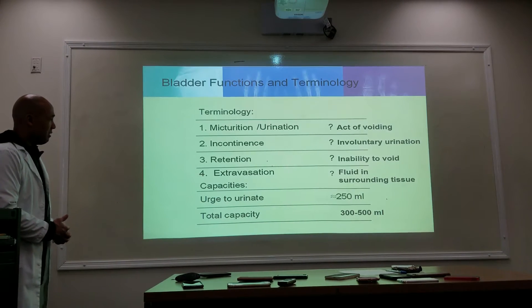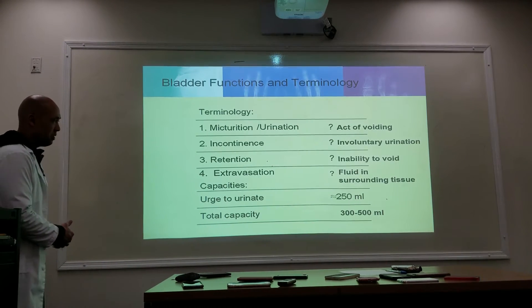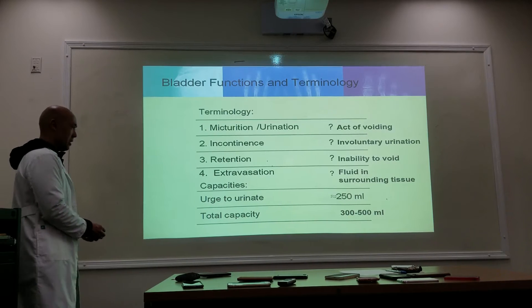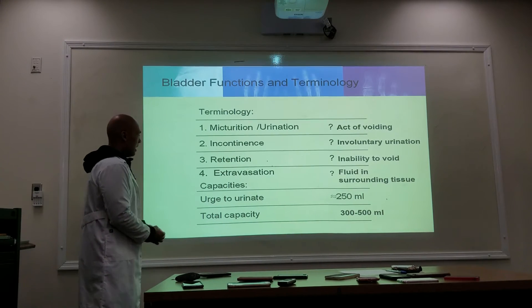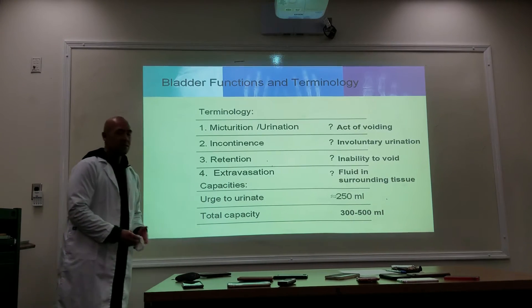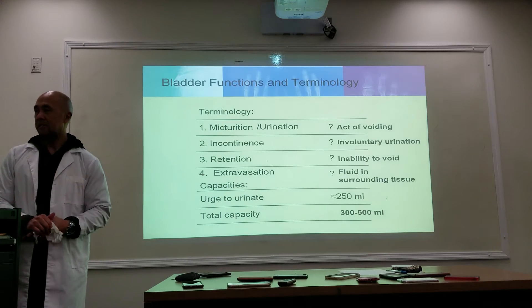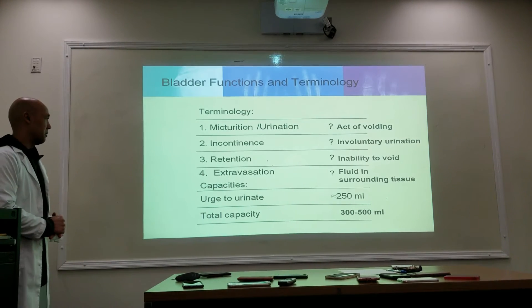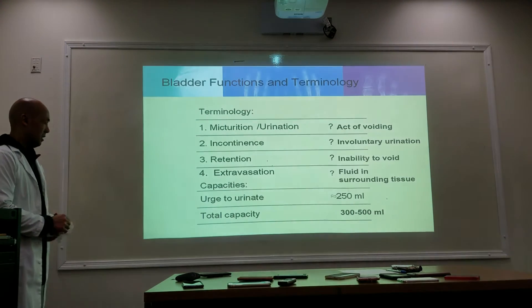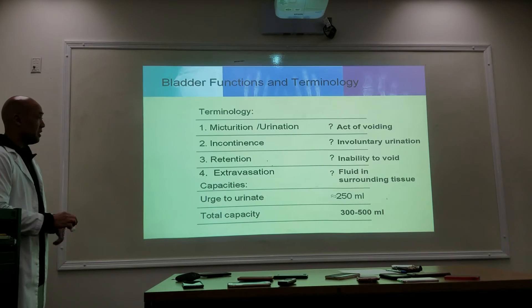You have the urge to urinate at approximately 250 milliliters. The total capacity of the bladder is anywhere between 300 to 500 milliliters, but you feel the urge to go at about 250.